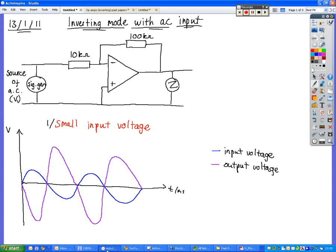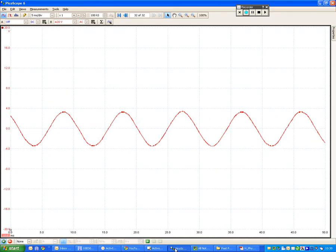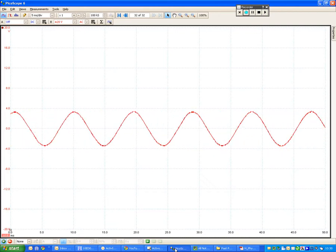But then if we begin to increase the input voltage to a point where the gain is going to produce an output voltage that is larger than plus or minus the supply voltage, then that can't happen. So that's when saturation kicks in. I'll show you what that looks like on the oscilloscope.